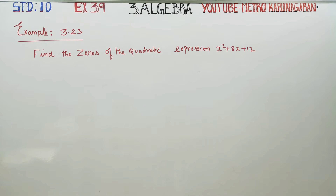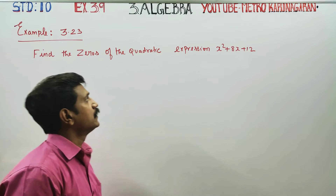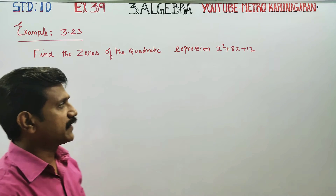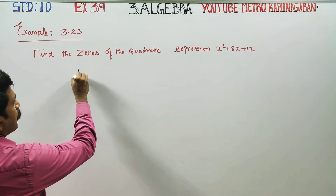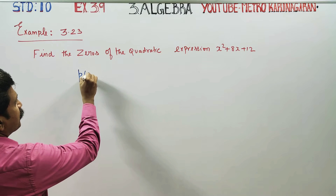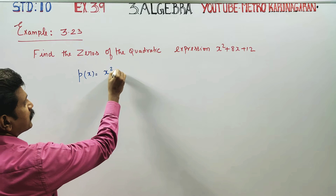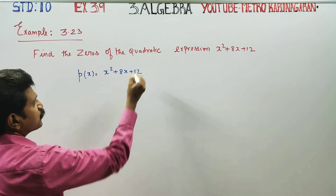Dear 10th standard students, in example 3.23, find the zeros of the quadratic expression. Power 2 is called quadratic. In the expression, the name is P of X. In the polynomial, the expression is X squared plus 8X plus 12.